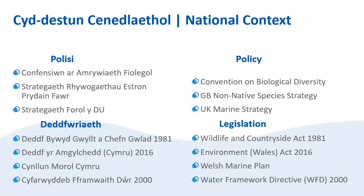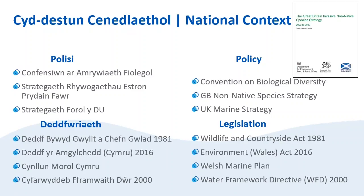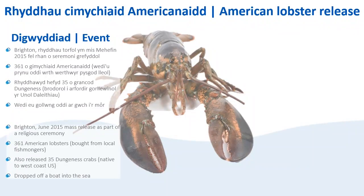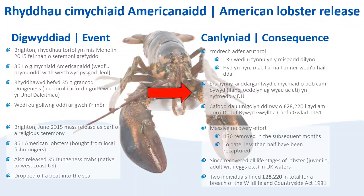As well as wanting to limit and prevent the environmental and economic impacts of INNS, we also have a legal responsibility to address INNS. This is reflected in UK policy, like the GB Non-Native Species Strategy which was updated last year, and legislation like the Wildlife and Countryside Act of 1981 under which people can be prosecuted for introducing or spreading INNS. An example of legislation in action is the American lobster release in 2015 in Brighton, where 361 lobsters and 35 Dungeness crabs which had been bought from local fishmongers were released from a boat into the sea. The consequence of this was a massive recovery effort which managed only to recapture 136 in the subsequent months. To date, less than half have been recovered and all life stages have since been found, showing that they are breeding in UK waters. Two individuals responsible for the mass release were fined over £28,000 for breaching the Wildlife and Countryside Act.